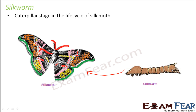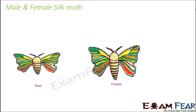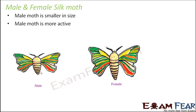It is quite interesting that a tiny worm is able to produce silk, something we go mad about wearing. To understand this, we need to know the life cycle of the silk moth and exactly when the silkworm stage occurs. In a silk moth, you can easily distinguish between a male and a female. A male silk moth is smaller in size, more active, while the female is less active and has a bigger abdomen.